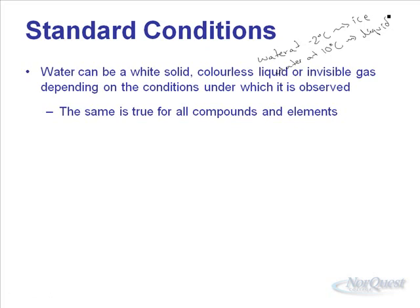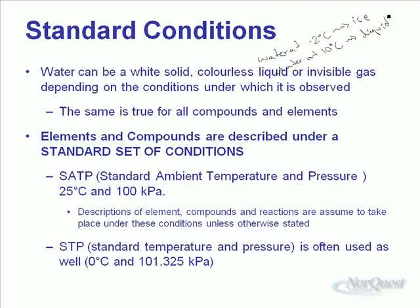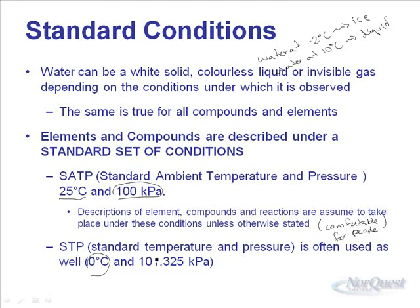There are two generally accepted standards used to describe substances: SATP and STP. SATP is standard ambient temperature and pressure — 25 degrees Celsius, 100 kilopascals. Most descriptions of elements, compounds, and reactions are assumed to take place at SATP unless stated otherwise. STP is standard temperature and pressure — 0 degrees Celsius and 101.325 kilopascals.